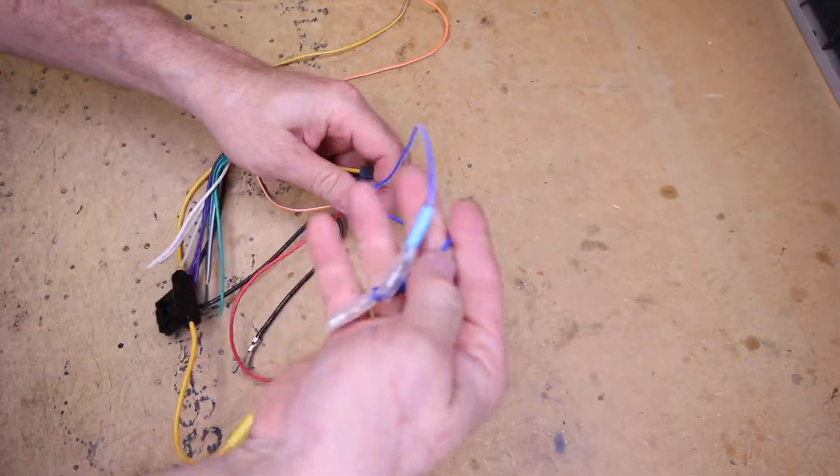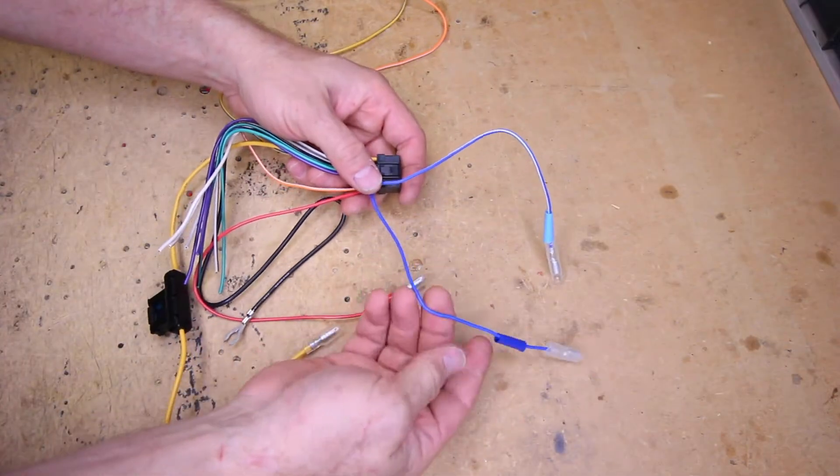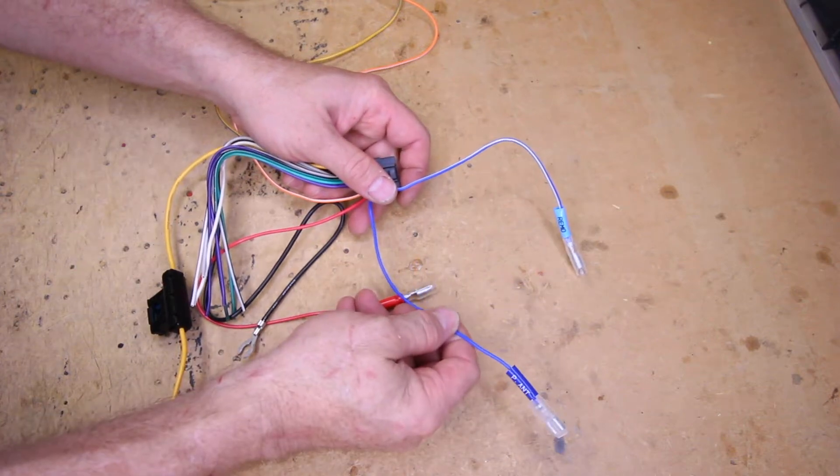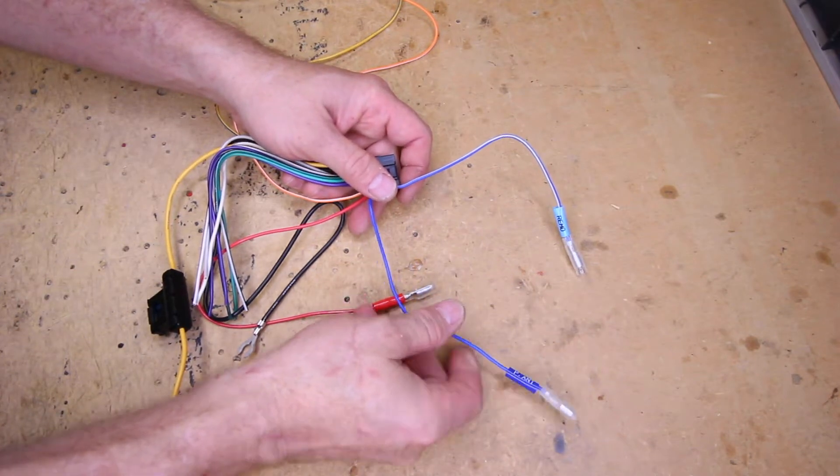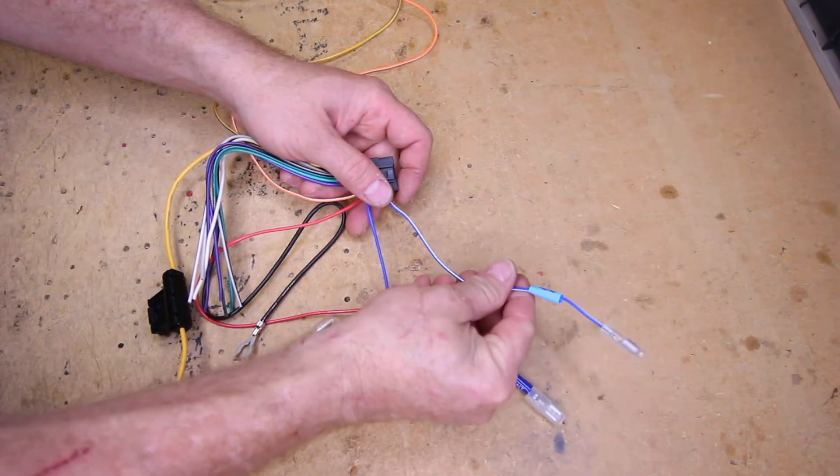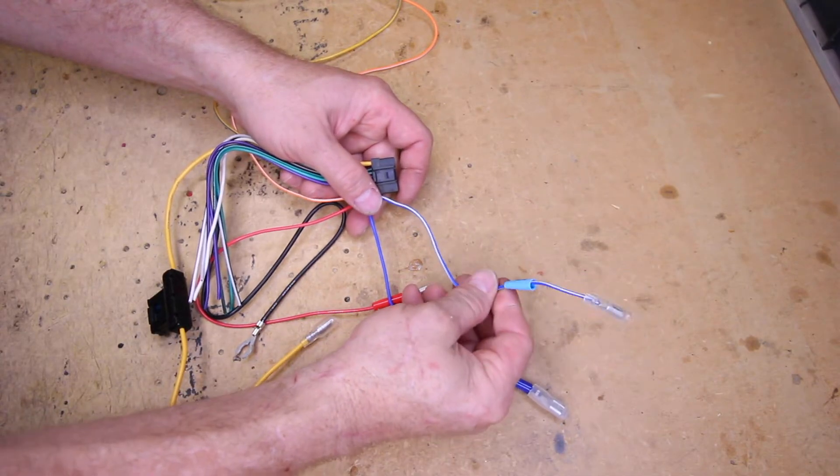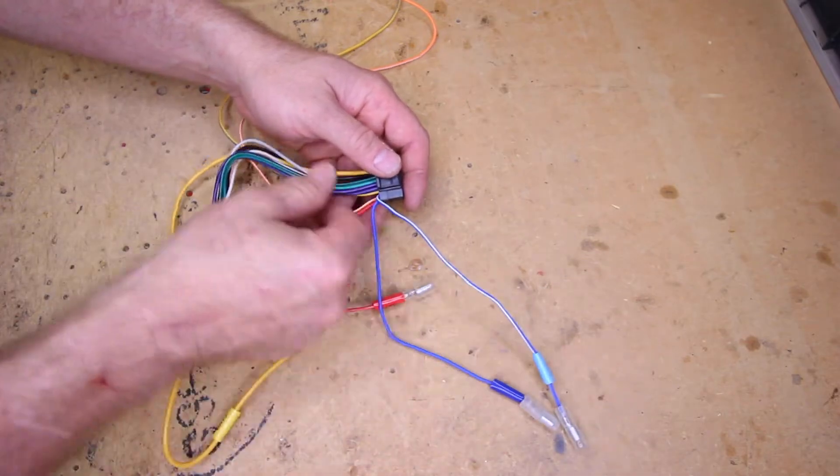So let's start right here with blue. There's two of them. You have solid blue and you have blue with a white stripe. Solid blue is going to be for a power antenna or an amplified antenna. Blue with a white stripe is going to be for an amplifier. So this will turn on your outboard amplifiers or possibly if the car has a factory amplifier.